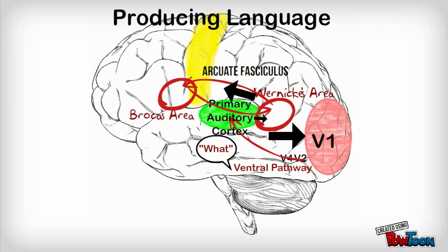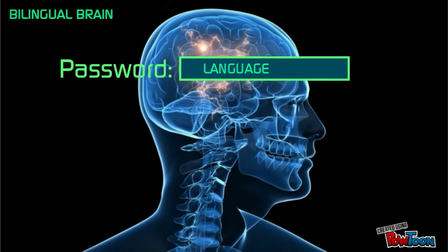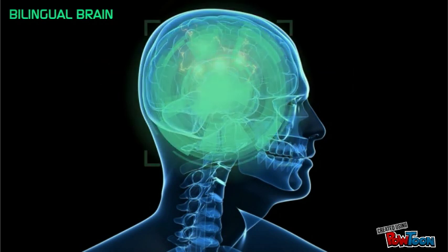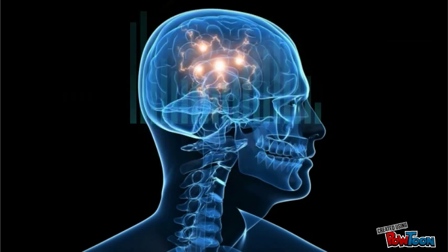For producing language, information is sent from Broca's area to the primary motor cortex that is responsible for moving the mouth to speak or moving the hand to write. People often say that language is the key to human intelligence. It is these brain regions and pathways that distinguish human intelligence from other animals.